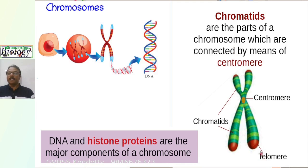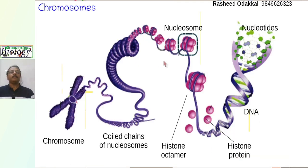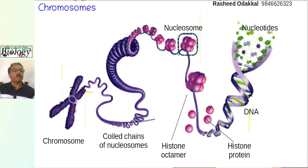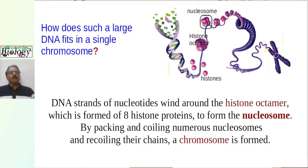Chromatids are the parts of a chromosome connected by the centromere. The end portion of the chromosome is labeled the telomere. DNA strands made up of nucleotides wind around a histone octamer, which is composed of 8 histone proteins, to form a nucleosome. The chains of numerous such nucleosomes are coiled, wound, and packed, and again recoiled and packed, to form a chromosome.